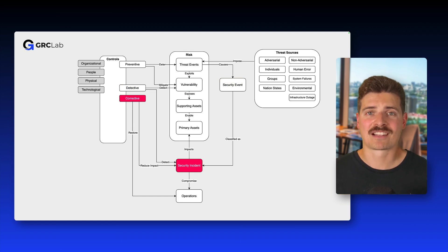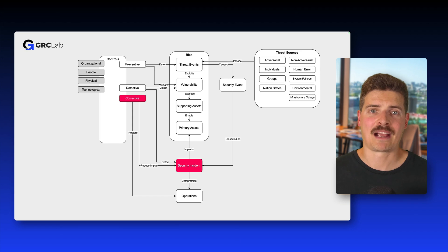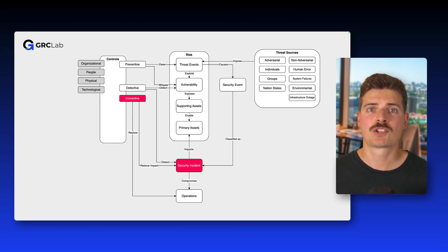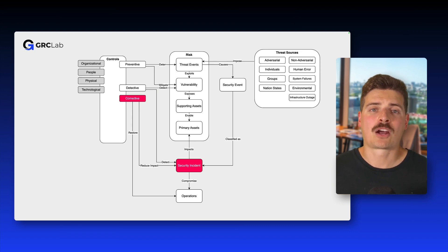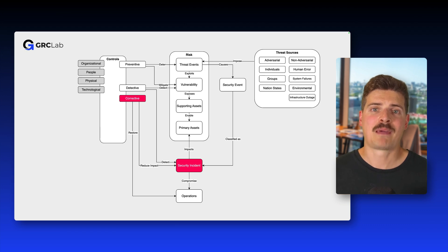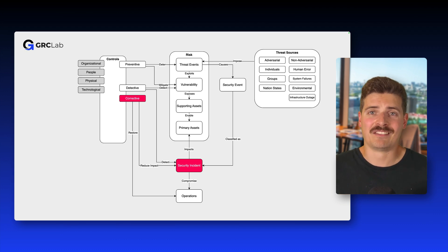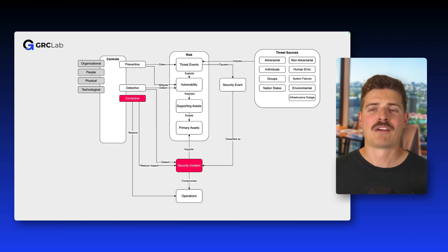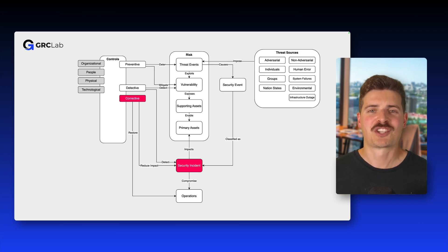Corrective controls kick in after something goes wrong. They are all about limiting the damage and getting things back to normal. Good examples include data backups to restore lost information, or system recovery plans to quickly bring systems back online. Having these in place ensures you can bounce back quickly when incidents occur. Of course, this is just a high-level introduction to cybersecurity risk management. If you'd like to go deeper, I've linked a few helpful resources to this lecture, so feel free to explore them at your own pace.